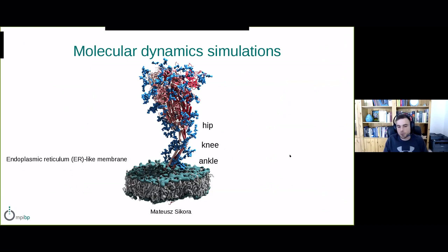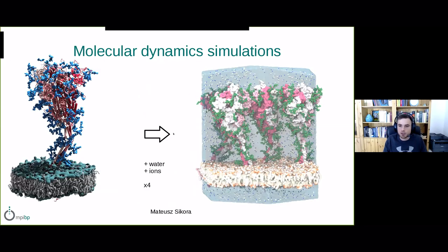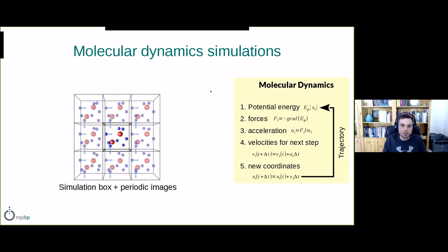First thing we noticed was this whole assembled model had very clear bending or hinges. We thought we could coin names for them: the hip, knee, and ankle, which would be easier to follow. To increase our chances of catching interesting movement of the spike, we multiplied it four times. When we added water and ions into it, we created this simulation box. There's a technique I'm using called molecular dynamics simulations, which uses physics-based potentials between atoms.